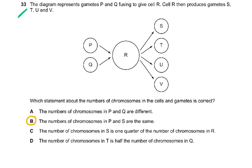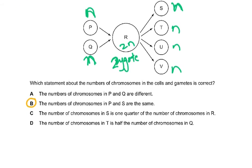Question 33: the diagram represents gametes P and Q, so these are gametes, so these have to be haploid. They're fusing to give rise to a cell, so this is diploid and this must be the zygote. P and Q fusing to give cell R, so this would be 2N. Then cell R produces gametes, so these are all N again. Haploid gametes are always haploid. Which statement about the number of chromosomes is correct? The number of chromosomes in P and S are the same, yes it would be N. N in P and N in S, so chromosomes will be the same. Unless you knew what gametes were, you could only do this question if you knew that.